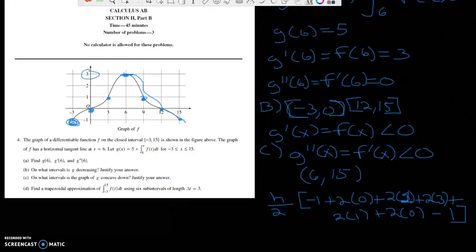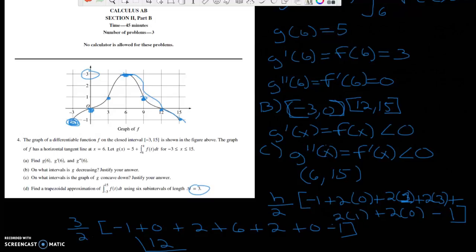Now, h is going to be 3 because it gave us delta t is 3. So, 3 halves. Negative 1. Plus 0. Plus 2. Plus 6. Plus 2. Plus 0. Minus 1. So, now we're going to get negative 1. 2 is 1. 7. 9. 8. So, 8 times 3. 24. 24 divided by 2 is 12. Our answer is 12.